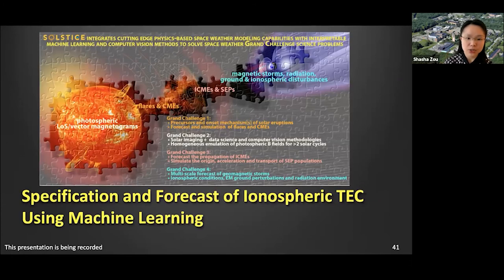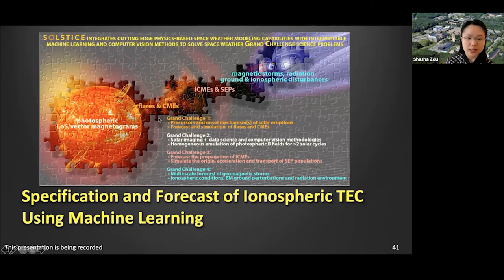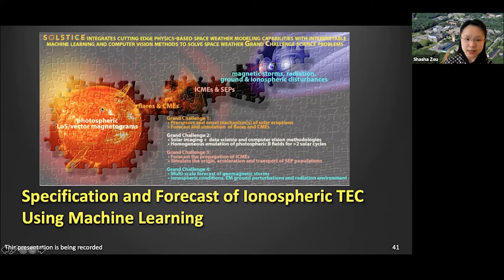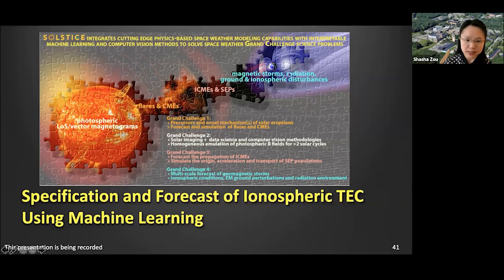For the second part of this seminar, I'm going to talk about using machine learning to specify and forecast the ionosphere TEC. This is one task of our CCSDIS DRIVE Center. The DRIVE center tackles four grand challenges facing heliophysics, all the way from the Sun: forecasting and assimilating flares and CMEs, their propagation in the heliosphere, how they energize or accelerate energetic particles, and finally their impact in the geospace system. The specification and forecasting of ionosphere TEC is one task of this grand challenge four.